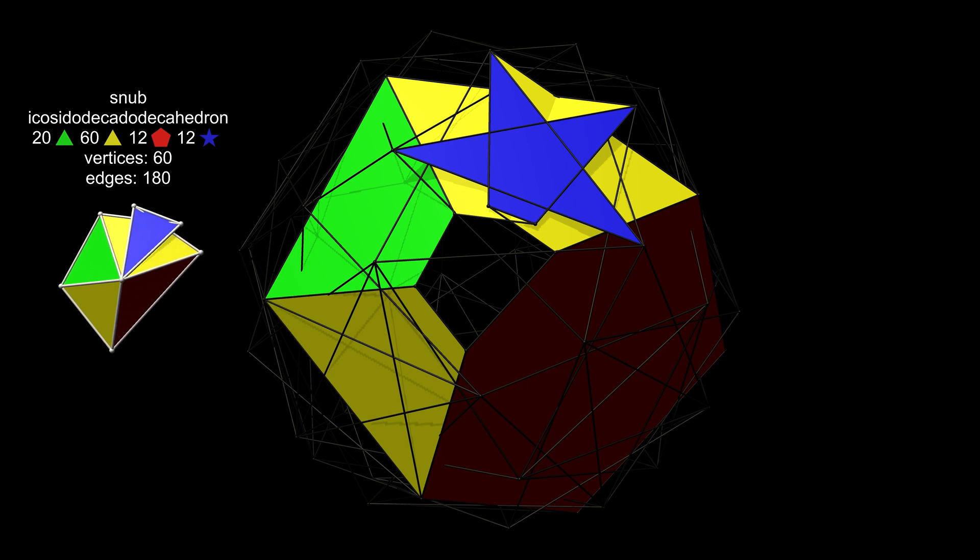The sequence of faces around each vertex is known as vertex configuration, and is written, in this case, 5 3 3 3 5 over 3 3. This is normally abbreviated to this. Note that the pentagram appears as 5 over 3, which is a reversed 5 over 2. This vertex is not mirror symmetric.